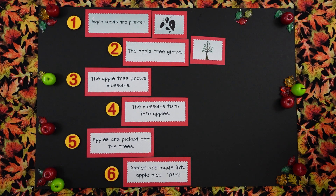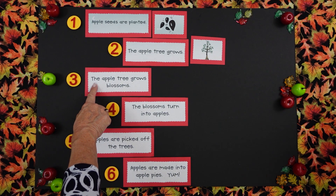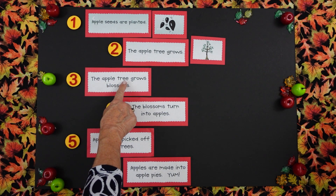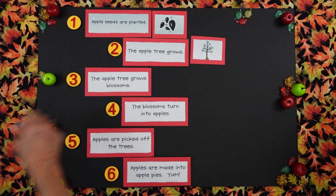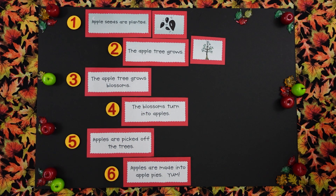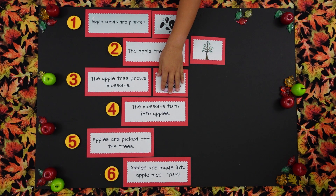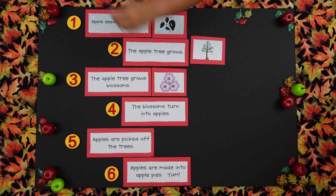Jennifer, can we all read this together? The apple tree grows blossoms. Can you put that picture in the right place by number three? Are the blossoms on an apple tree always pink? I think they are. Miss Perry? Sure, I think they are.